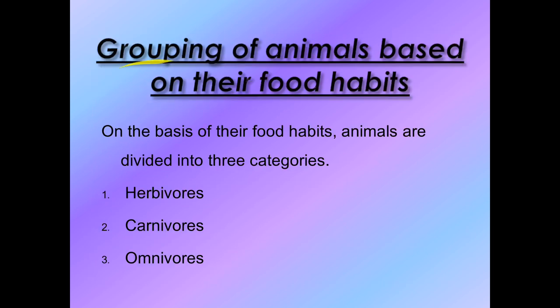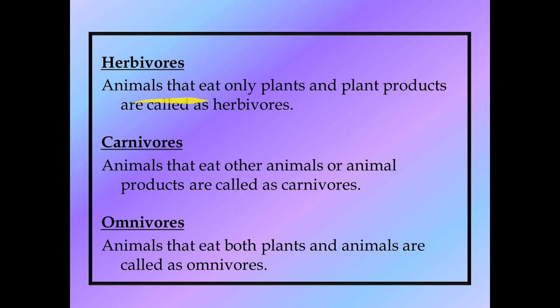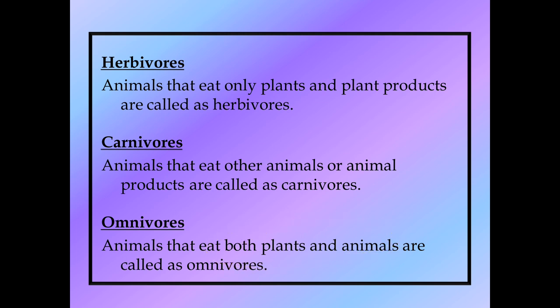To summarize the grouping: there are three groupings based on food habits. First is herbivores - animals that eat only plants and plant products. Second is carnivores - animals that eat other animals or animal products. Third is omnivores - animals that eat both plants and animals. Now we have discussed these three categories, and next we will see examples and how to apply this.